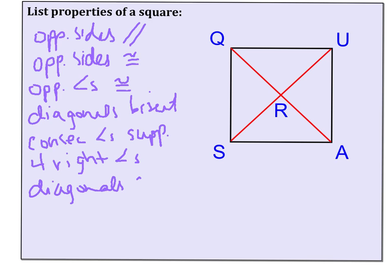And from a rhombus we know that the four sides are congruent, the diagonals are perpendicular, and lastly the diagonals bisect the opposite angles.